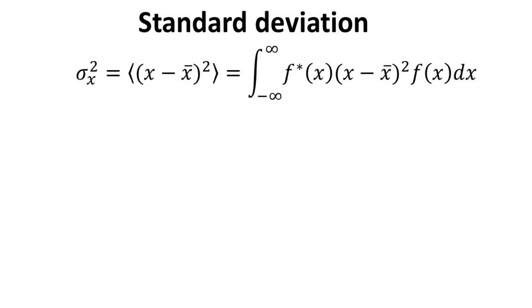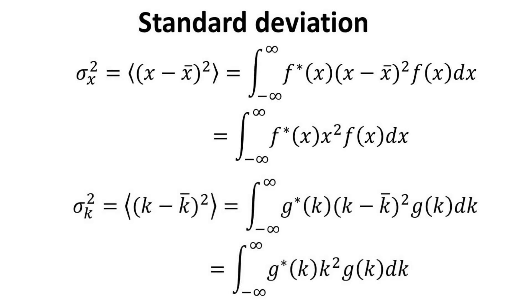Recall that the standard deviation is a measure of how the individual measurements on average deviates from the mean. Mathematically, the variance in x can be expressed as the expectation value of the square of the position relative to its mean. Since the expectation of x, x bar, is zero, we can write the variance of x as follows. Similar expressions can also be obtained for the variance of k.